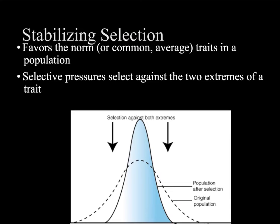Stabilizing selection favors the norm, the common, the average traits within a population. Individuals in the middle of the distribution have the advantage, so there are selective pressures against the two extremes.